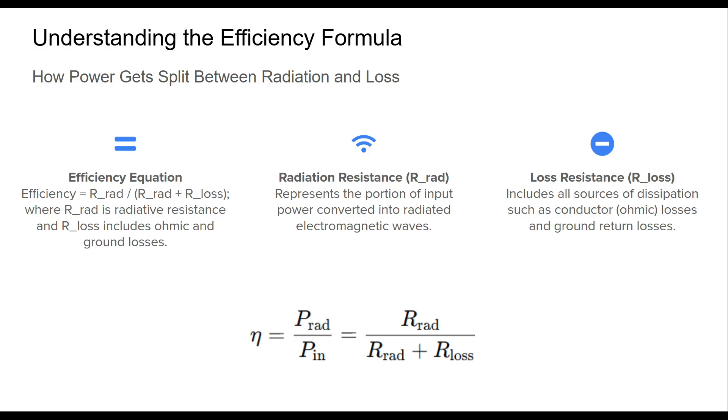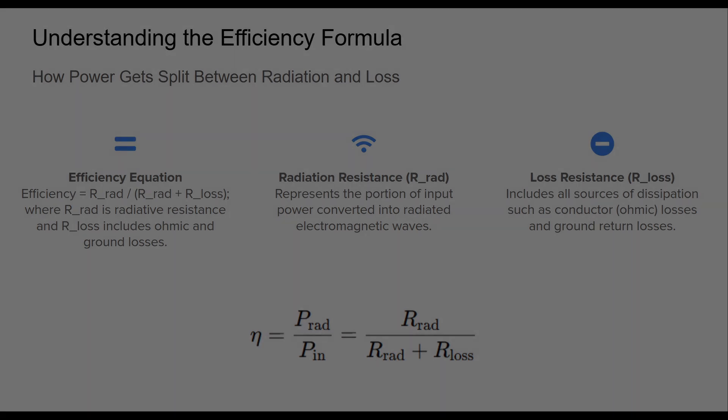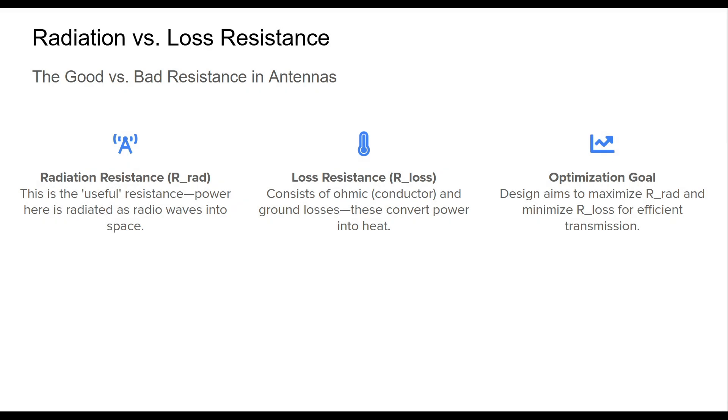If you look at the formula below, it looks intimidating at first. The squiggly η (eta) on the left is the symbol for efficiency, and it equals your power radiated divided by your power into the antenna system, which equals R_rad divided by (R_rad + R_loss). In every antenna, there's a tug-of-war between radiation resistance and loss resistance. R_rad is the component of total resistance that results in the desired output: radio waves.